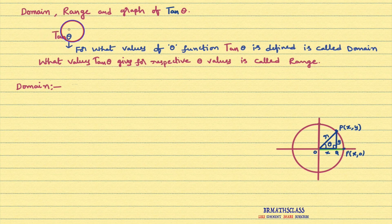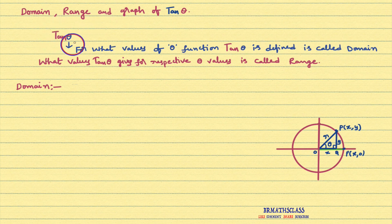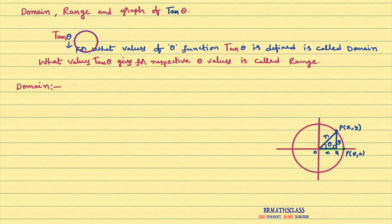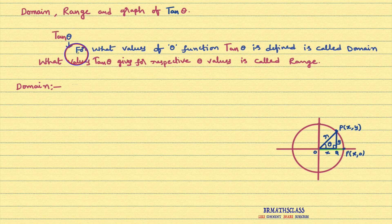We will see the general definition of domain and range of tan theta. What values of theta the function tan theta is defined is called domain of this function. For example, tan pi by 4 is defined — yes, so pi by 4 will be there in its domain. Tan pi by 3 is defined — yes, so pi by 3 will be there in its domain. Tan pi by 2 — as per the trigonometry table, tan pi by 2 is not defined, so pi by 2 does not belong to its domain.